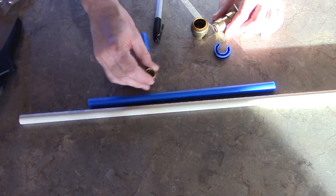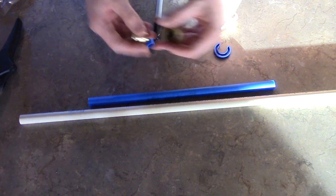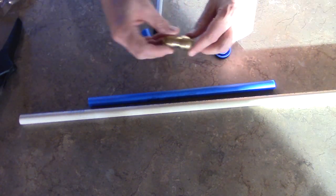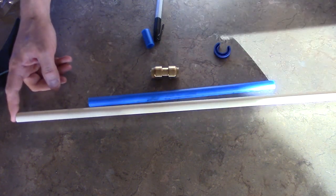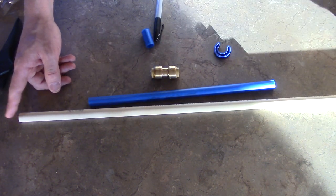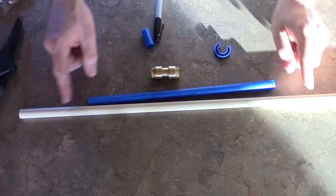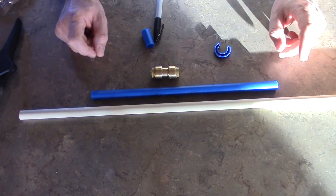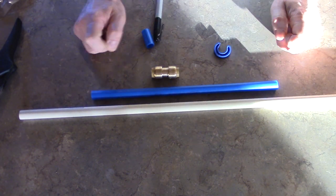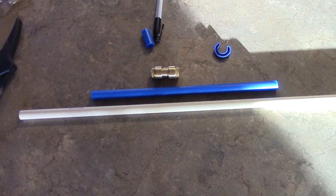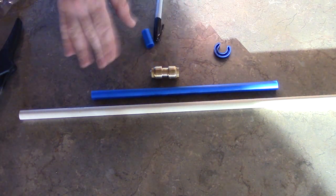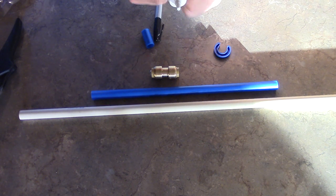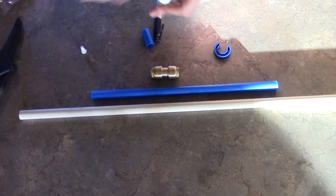So here's our SharkBite fittings, here's a couple caps. We're going to take the coupler. One of the cool things about CPVC, which I don't like, but the cool thing about this and the PEX and copper is that they all have the same outside diameter. The great thing about that is we can use one fitting that rules them all. A little Lord of the Rings.